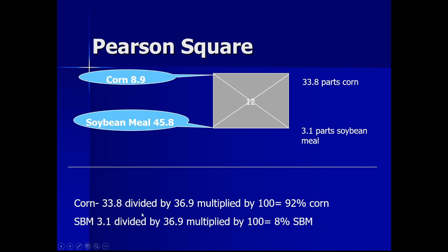To convert to 100 parts: out of 36.9 total parts, there are 33.8 parts of corn. So corn out of 100 = 33.8 ÷ 36.9 × 100 = 92 parts. Similarly, for soybean meal we get 8 parts. So after conversion, we have 92 parts of corn and 8 parts of soybean meal. Now if you take any sample from that 100 parts, you will always get 12% protein.